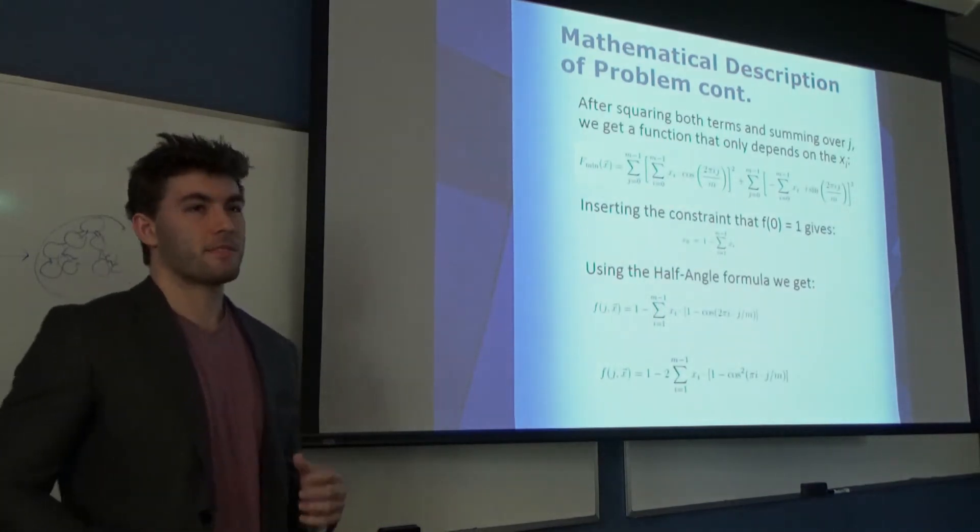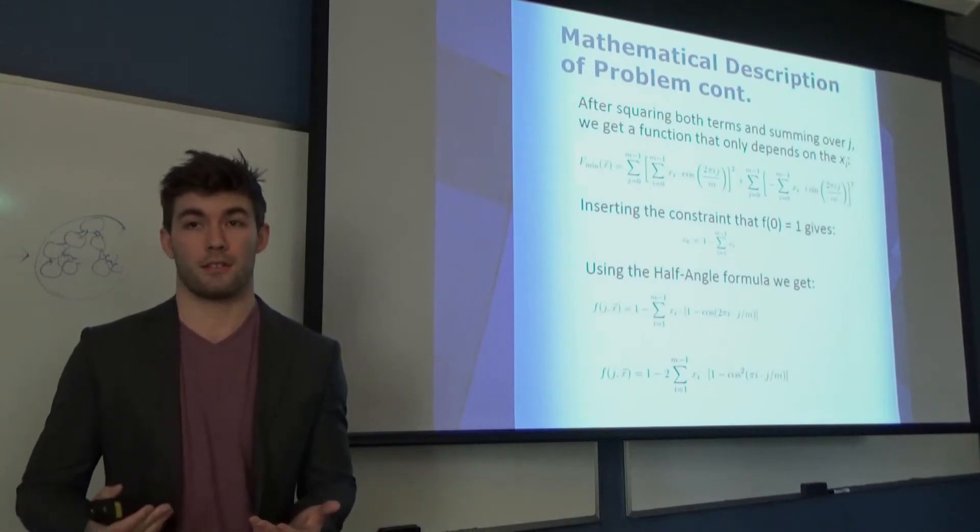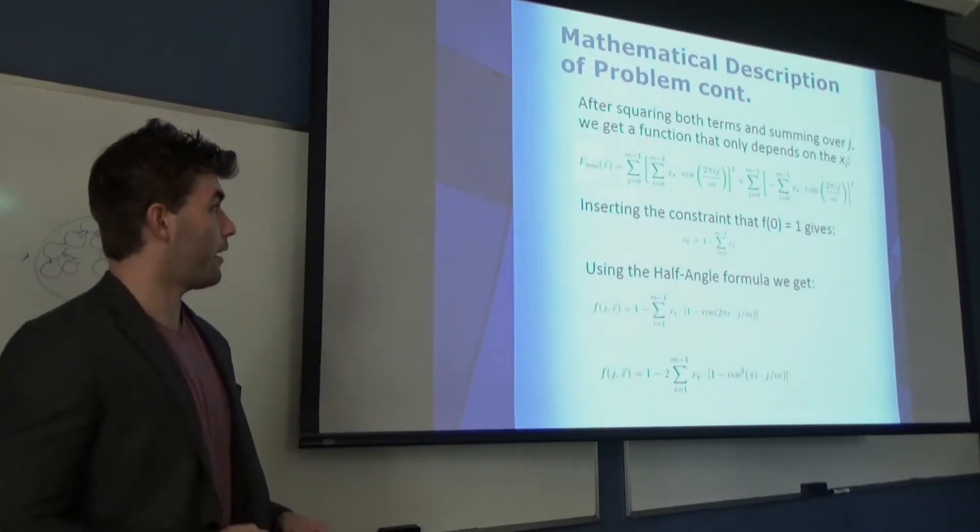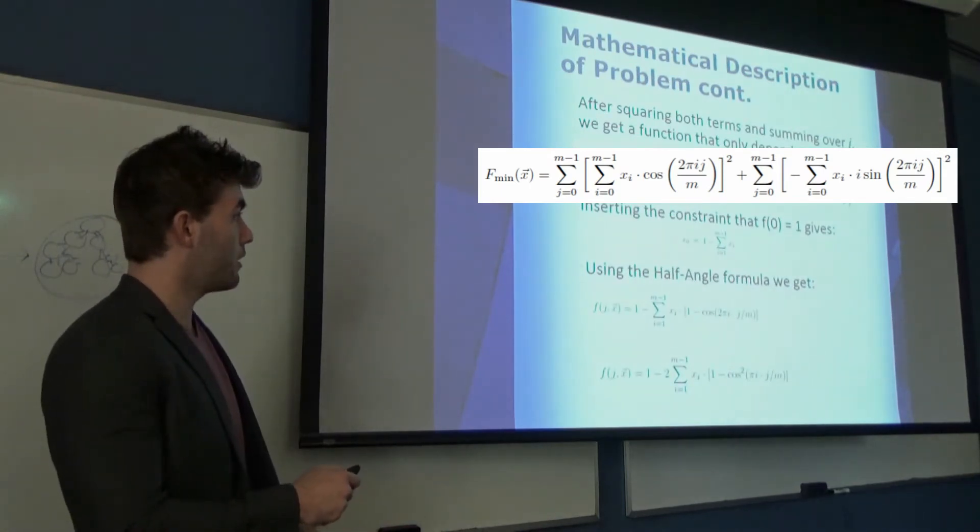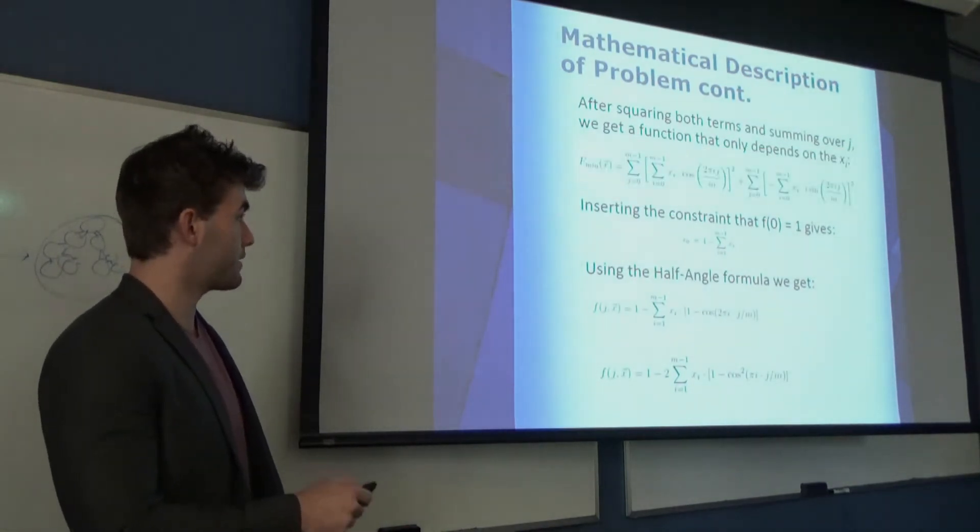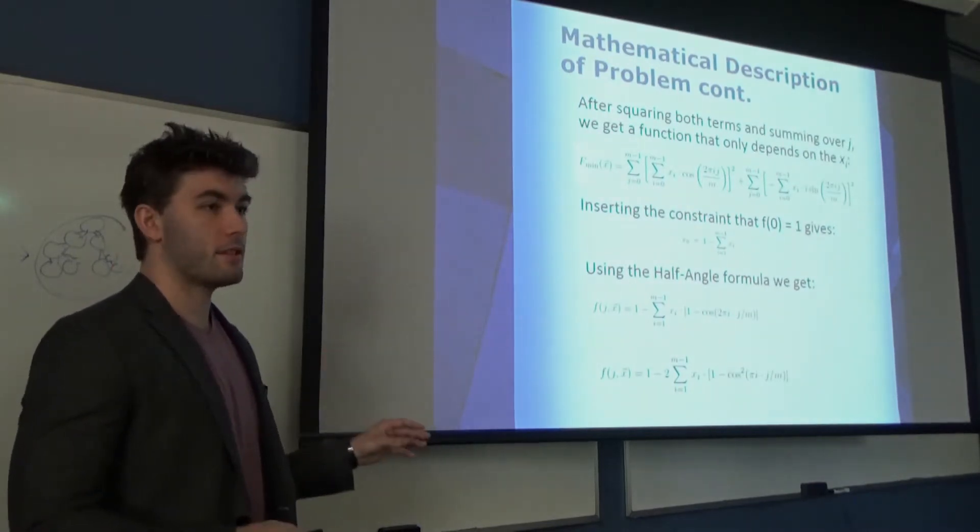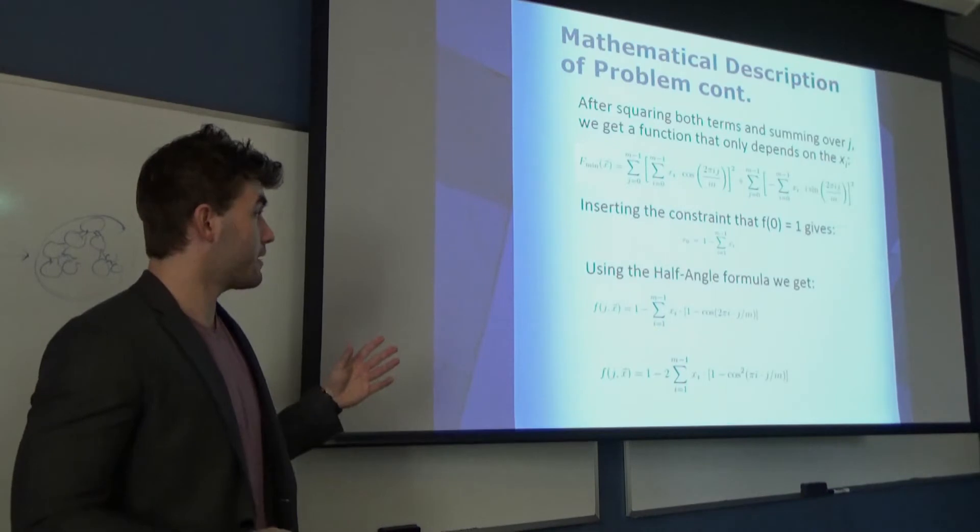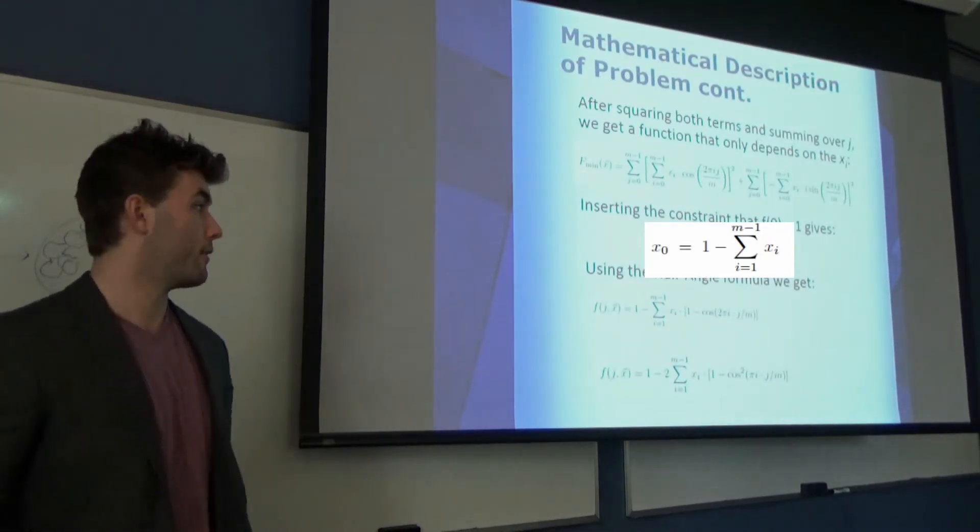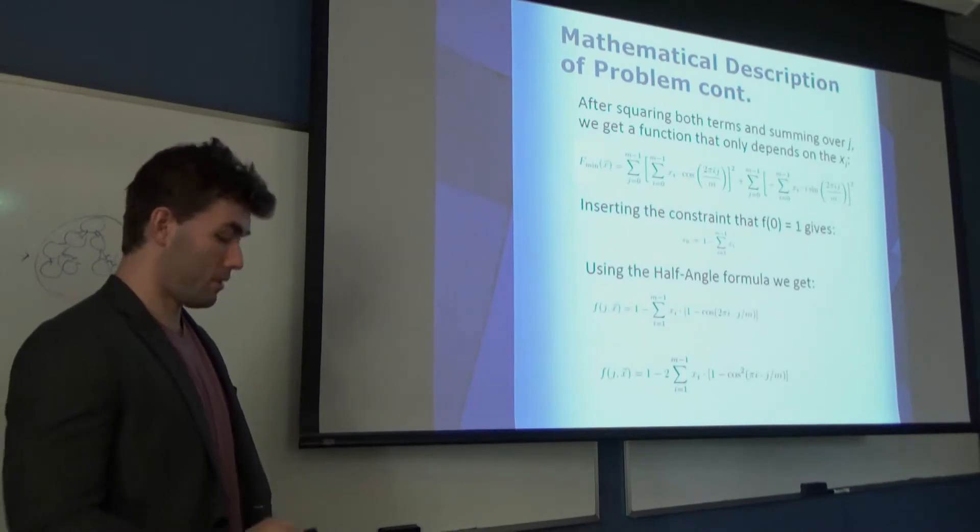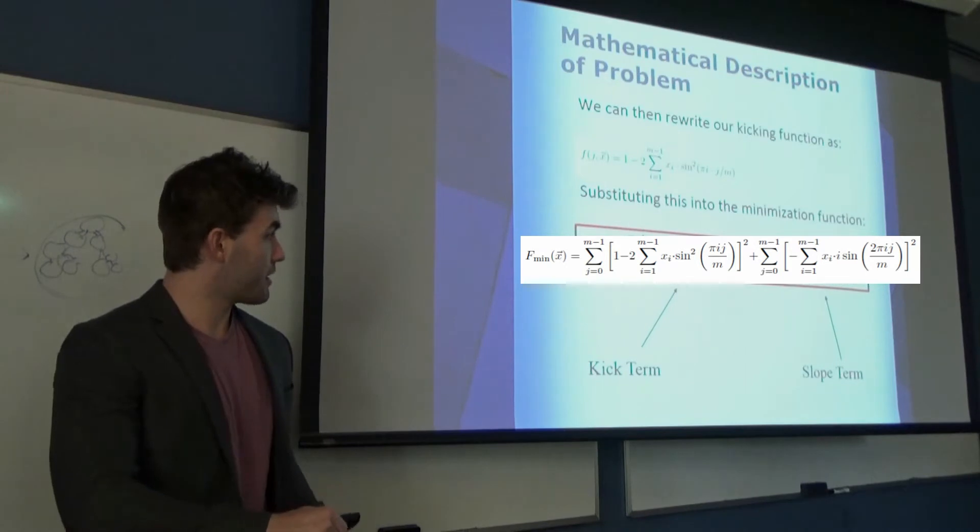Because of the symmetry of sine and cosine functions, we don't want terms canceling each other out in the minimization routine. So in order to get rid of that possibility, squaring both terms makes everything positive before summing all of the intermediate kicks and slopes. If we choose an x0 such that it's equal to 1 minus the sum of the other solution coefficients, we can normalize our function at theta equals 0. Doing some trigonometry, we arrive at the function that I want to minimize.